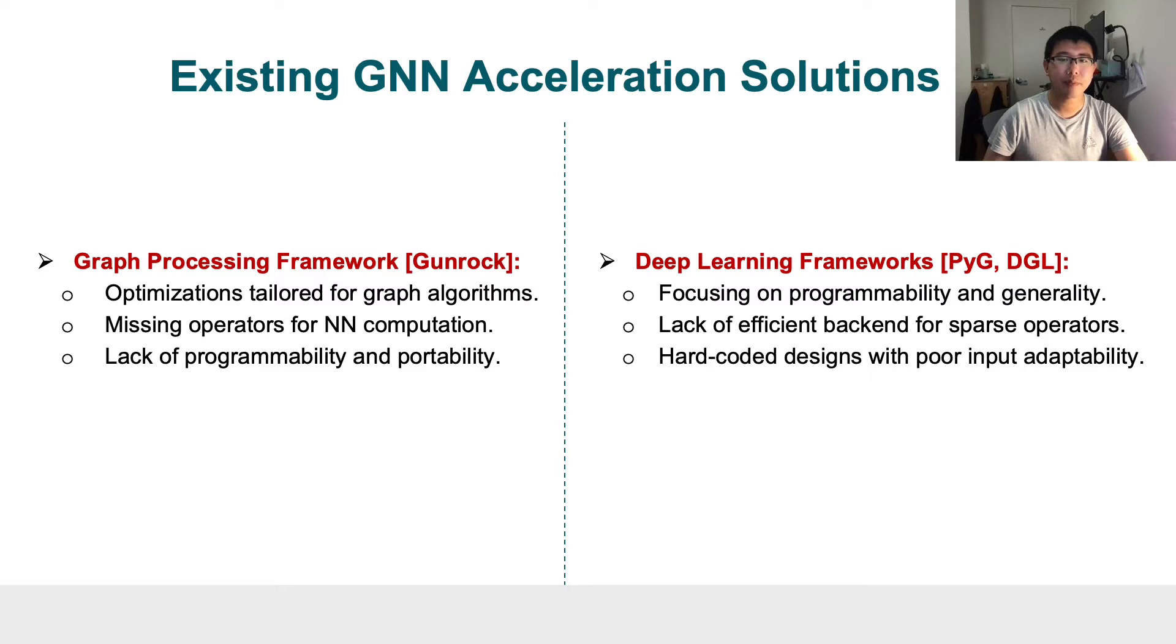The second one is the deep learning framework, which integrates graph operators to support sparse graph operations in existing GNN frameworks. However, it comes with two major drawbacks. First, they focus on programmability and generality but lack efficient backend support to achieve high performance on sparse operations. Second, their major computation kernels are hard-coded without considering design flexibility, which is essential to handle diverse application settings.